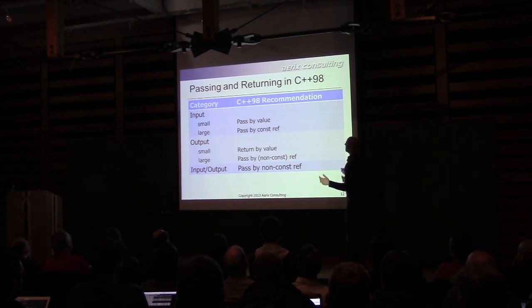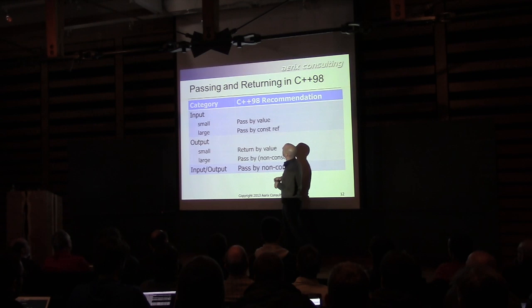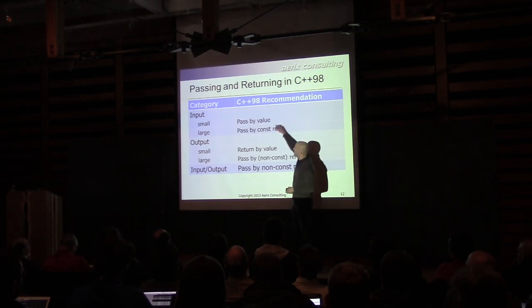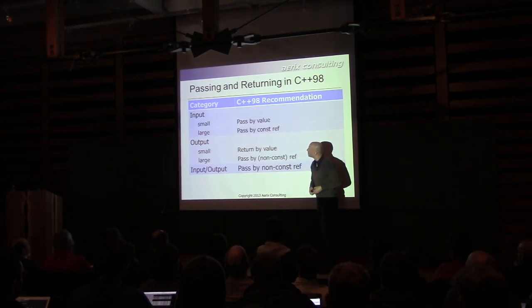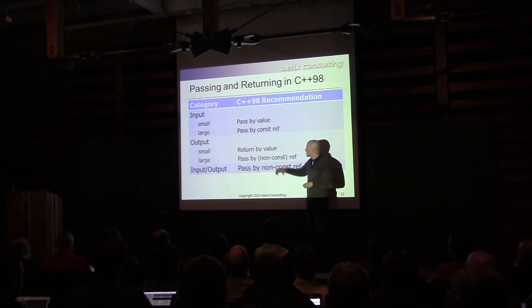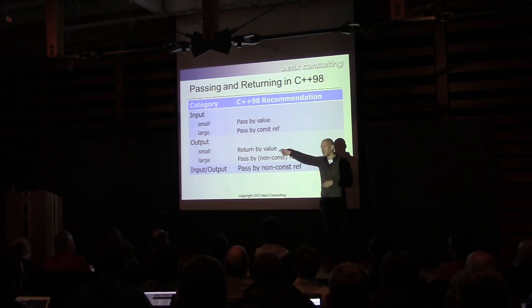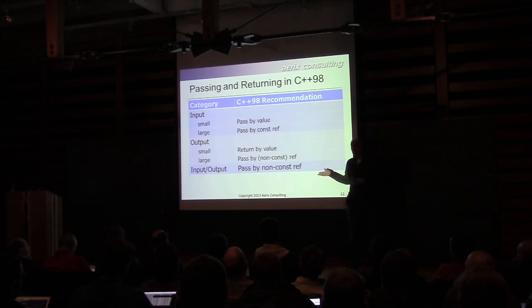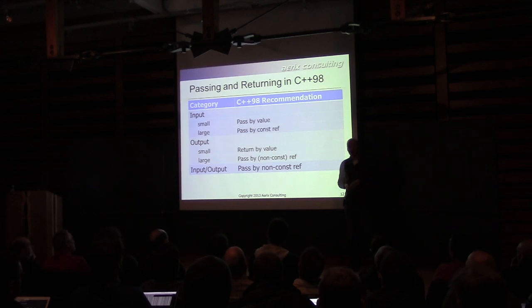Let's get really basic and talk about the best way to get stuff into and out of a function. Before we talk about C++11, let's go back to C++98. This is a chart describing parameter passing and function return in C++98. You've got input parameters, output parameters, and in-out parameters. If the input parameter is small, pass it by value; if it's large, pass by const ref. Output parameters: return by value if small, or pass as an out parameter by non-const ref if large. In-out parameters: also pass by non-const ref.